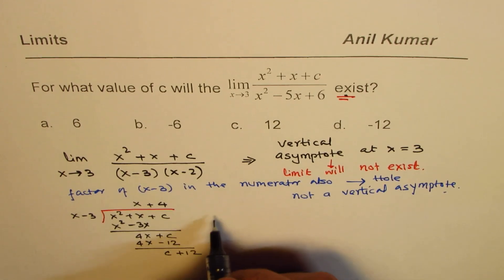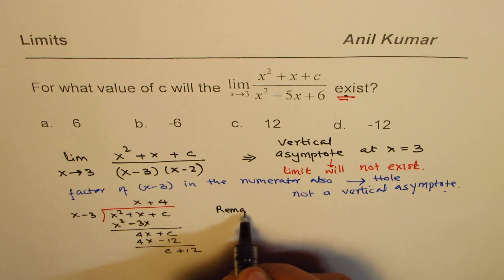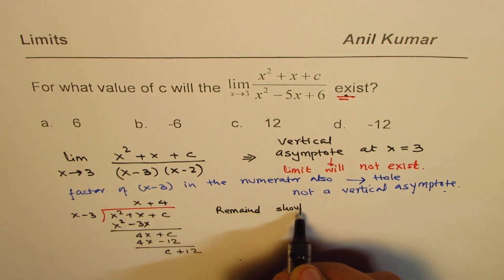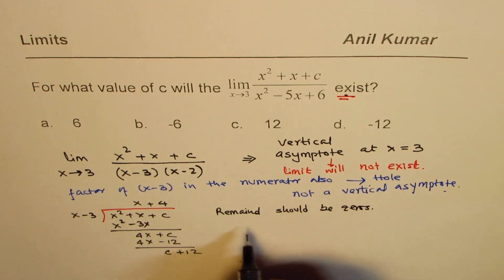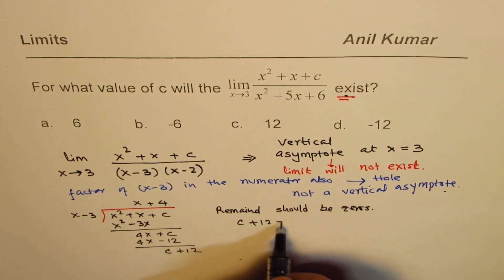As we discussed, remainder should be 0. That is to say that c plus 12 should be equals to 0 or c should be equals to minus 12. Do you get an idea?